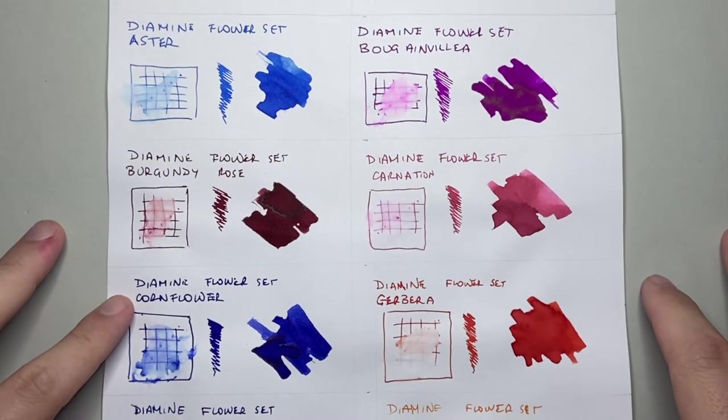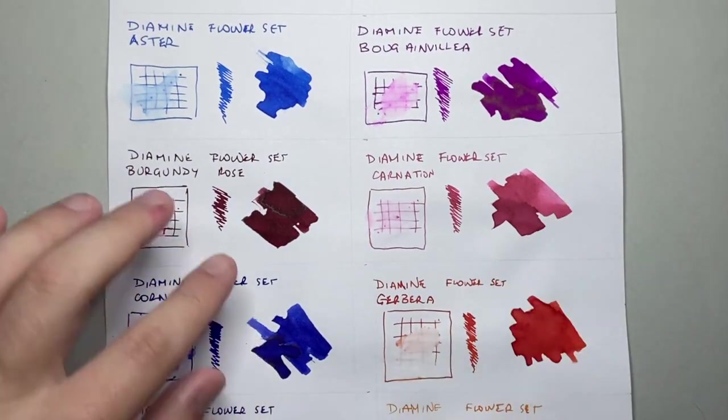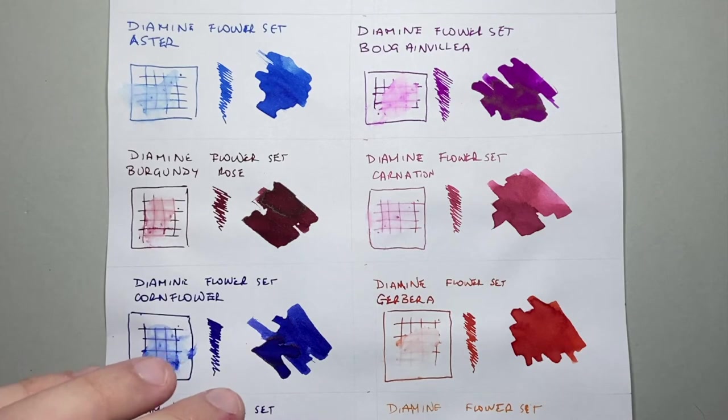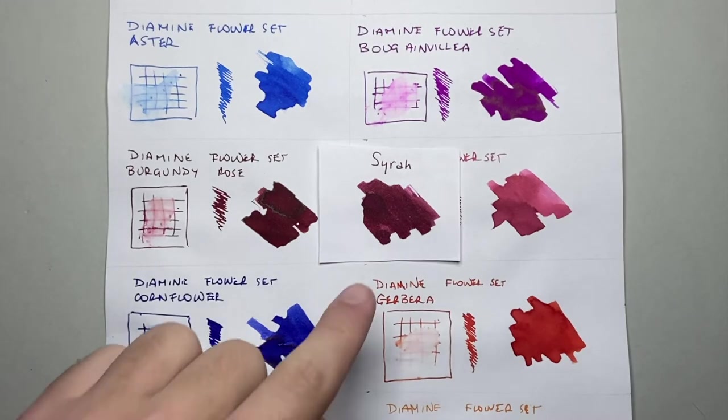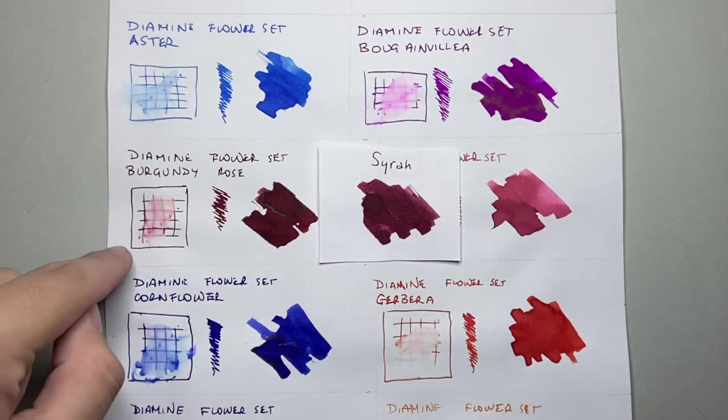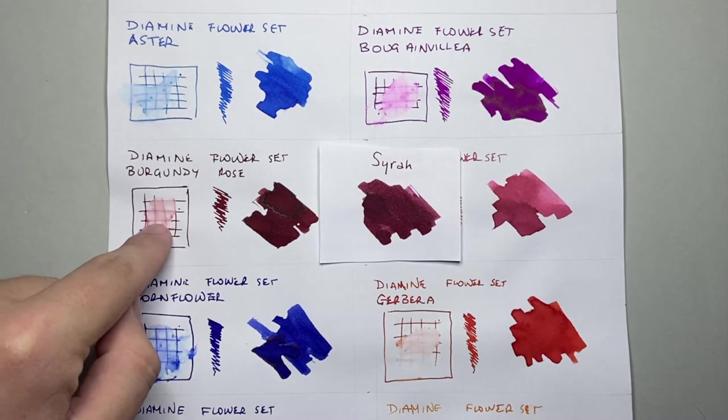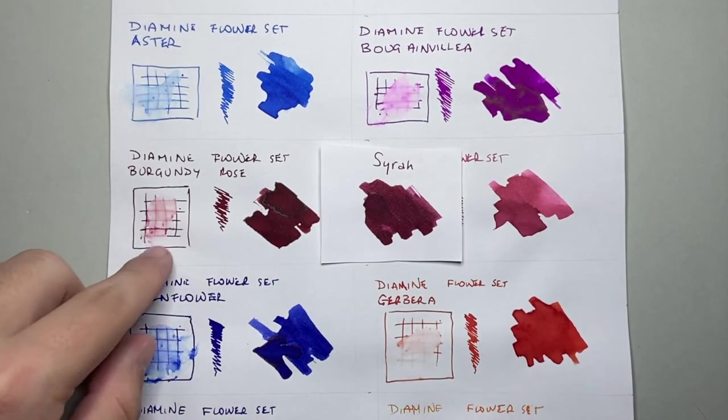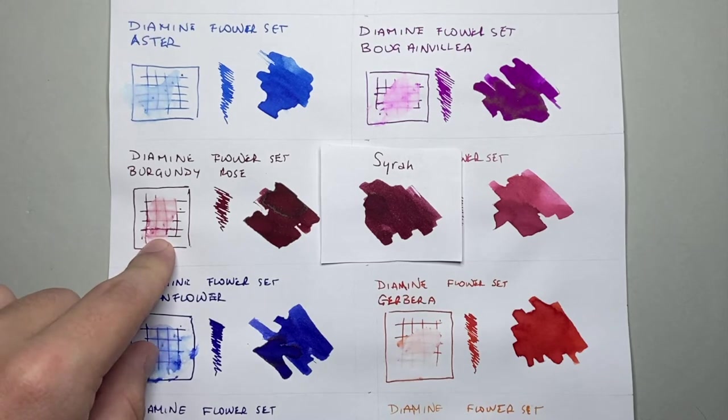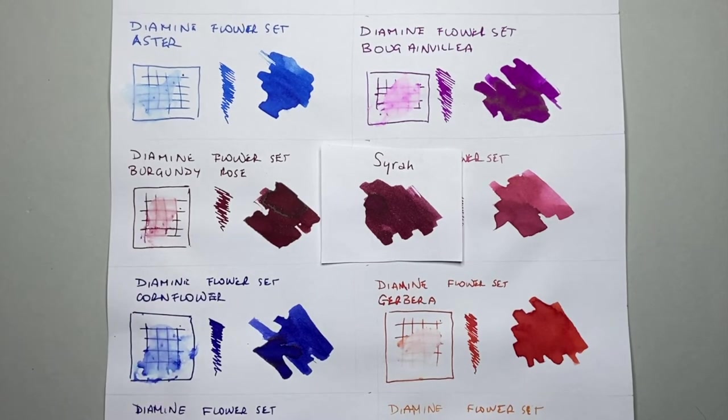Next, we have Burgundy Rose, which is a nice sort of brown burgundy. And for me, the ink I pull up as a sort of sample of this one is Syrah. Once again, there's a lot of similarities there in the colors. With the water here we lost a bit of the definition, but you can still read it. But it's a nice, it's sort of maintained a nice sort of like wash of the ink there from that water test.